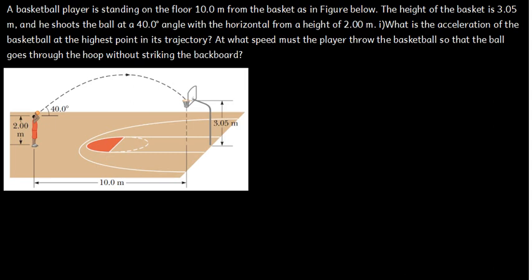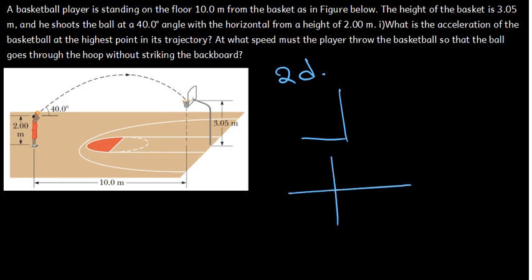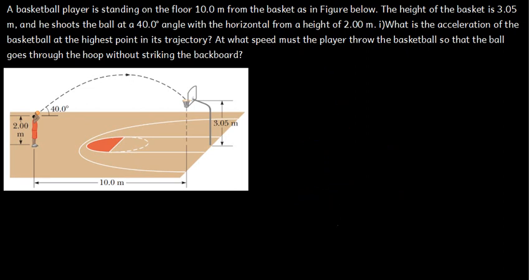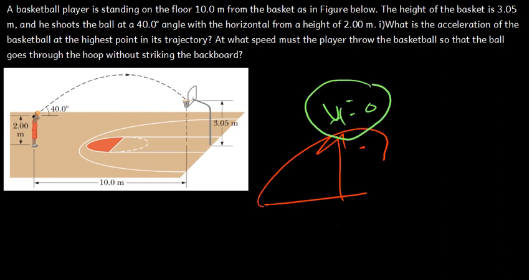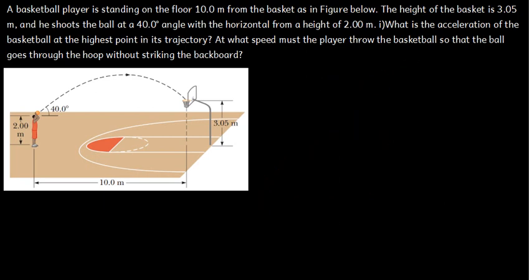Projectile motion involves motion in two dimensions — an object moving in both x and y. When the ball reaches its maximum height, at that highest point the final velocity is zero. Once the final velocity is zero, the acceleration at that particular point is also zero. So the answer to Part 1 is: the acceleration is zero.